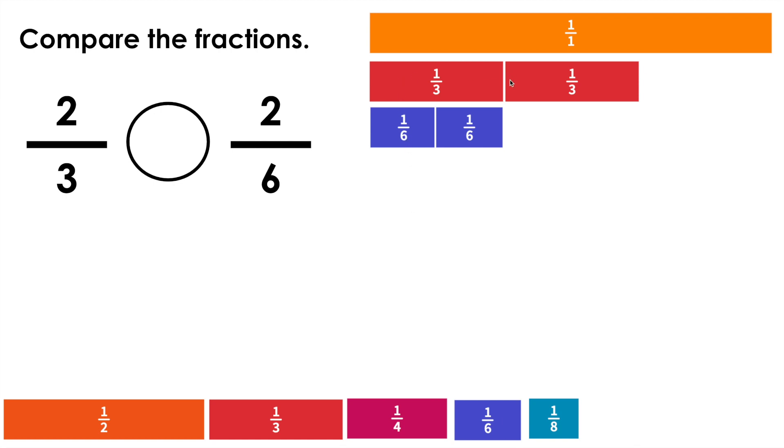We notice that 1 third is the same or equivalent to 2 sixths. Therefore, if we have 2 thirds, that's definitely greater than just 2 sixths. So we can say 2 thirds is greater than 2 sixths.